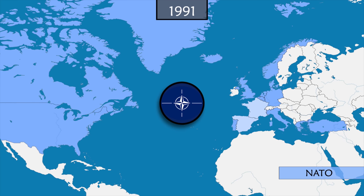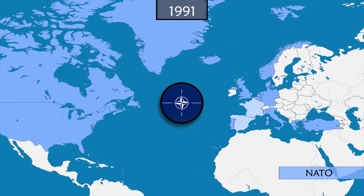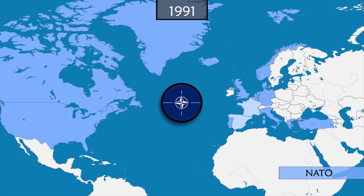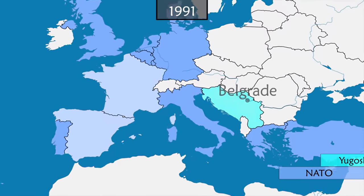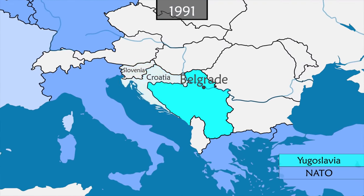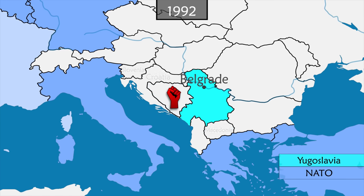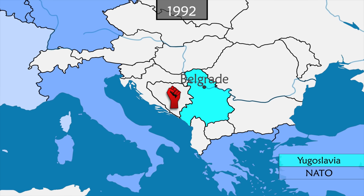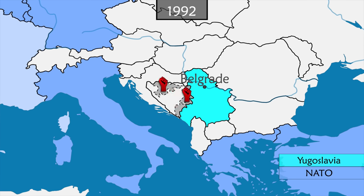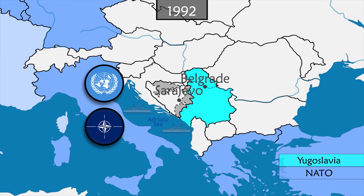From now on, in addition to its defensive mission, NATO will be able to intervene beyond its borders to support humanitarian missions and to ensure stability in Europe. In the Balkans, Yugoslavia is weakened by independence movements. After Slovenia, Croatia, and Macedonia, Bosnia-Herzegovina proclaims its independence, but the new country is populated by a large Serbian minority that proclaims its own independence and begins a siege of Sarajevo.